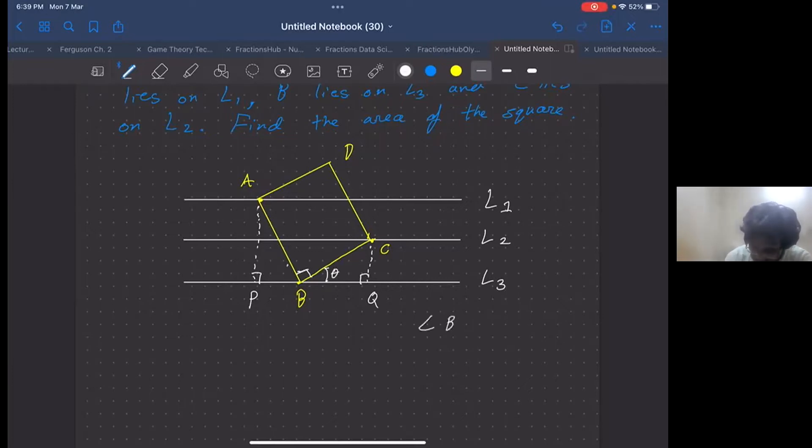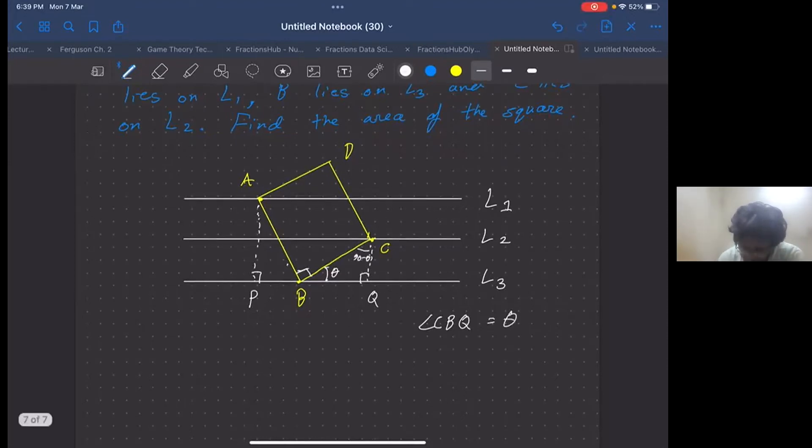The angle CBQ equals theta. Then from triangle BQC, it is evident that this angle will be 90 degrees minus theta. That is, angle BCQ equals 90 degrees minus theta, because angle BQC is a 90 degree right angle.